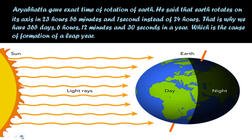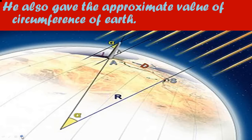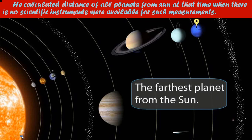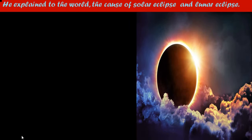Aryabhata gave the exact time of rotation of the earth. He said that the earth rotates on its axis in 23 hours, 56 minutes, and 1 second, instead of 24 hours. That is why we have 365 days, 6 hours, 12 minutes, and 30 seconds in a year, which causes the formation of a leap year. He also gave the approximate value of the circumference of the earth. He calculated the distance of all planets from the sun at a time when no scientific instruments were available for such measurements. He also explained to the world the cause of solar eclipses and lunar eclipses.